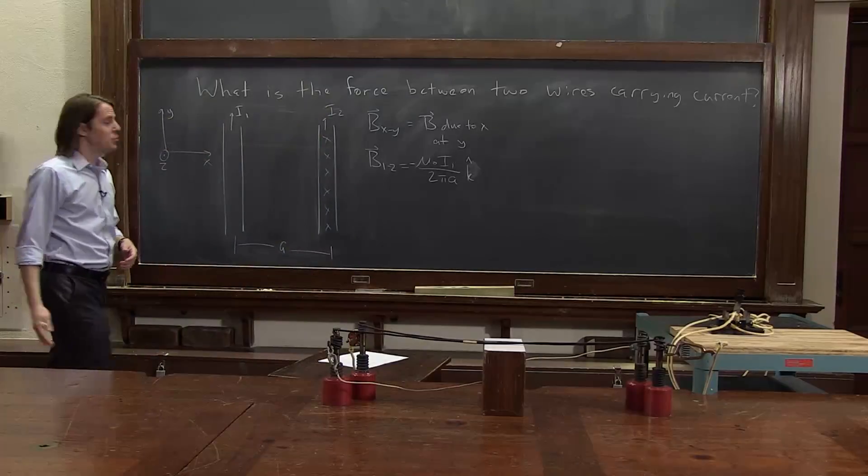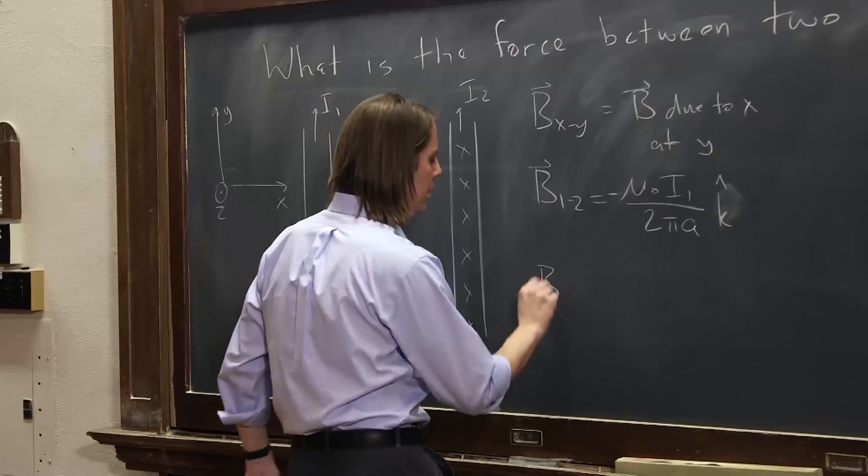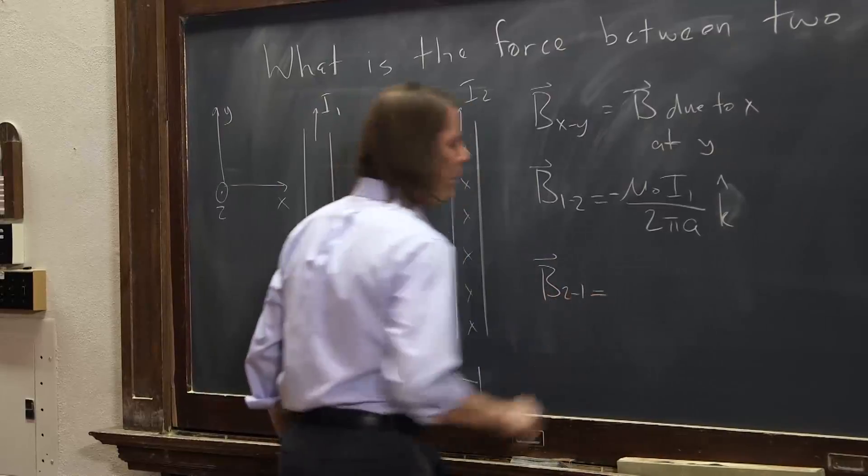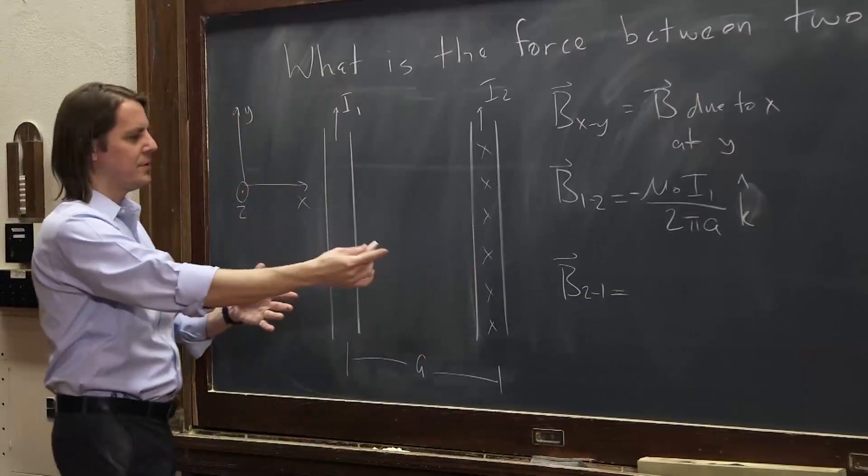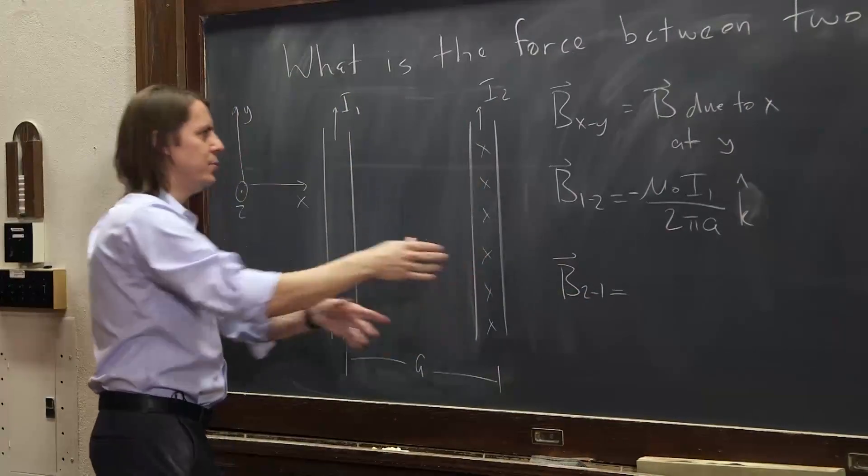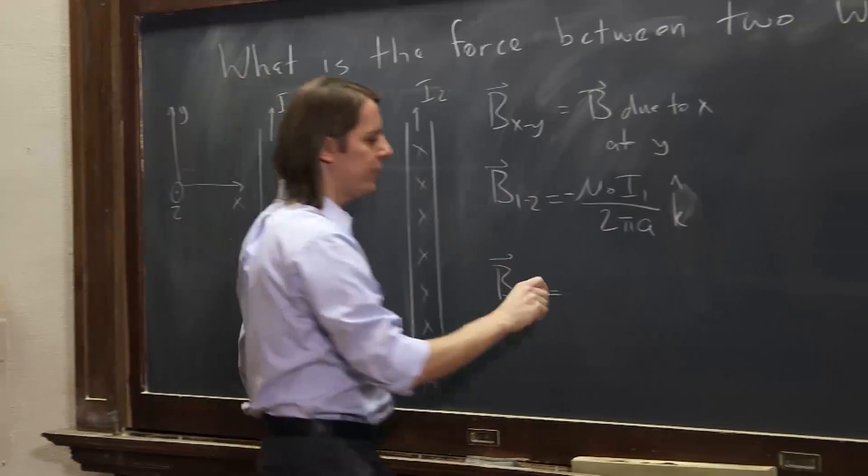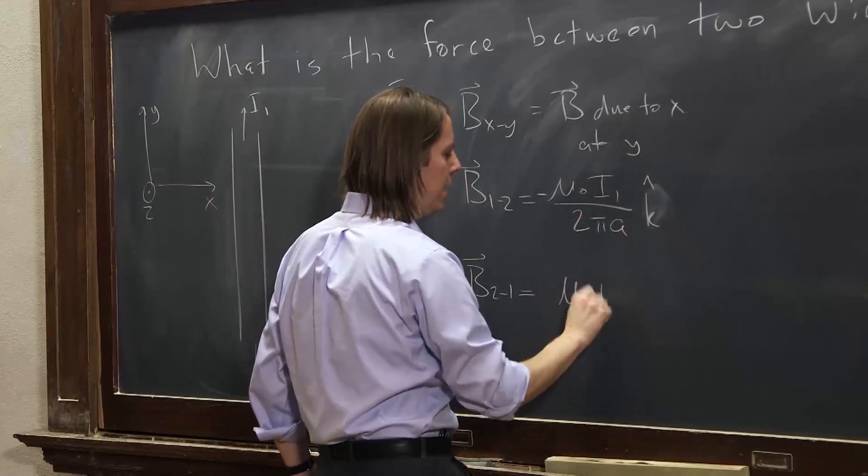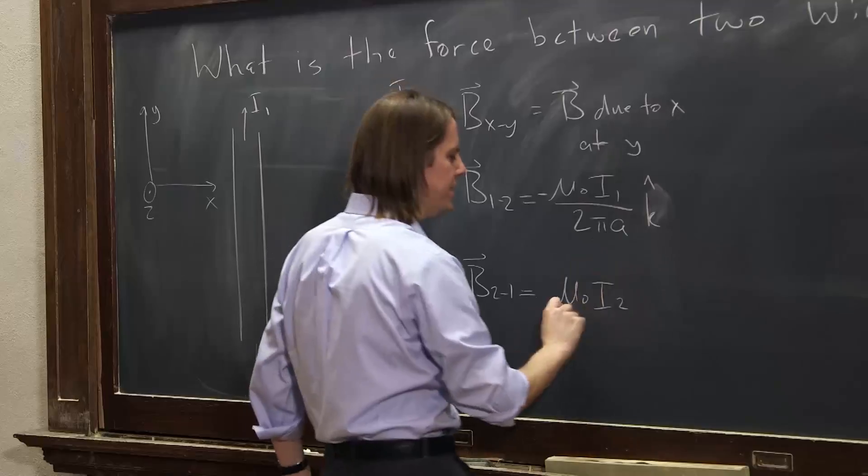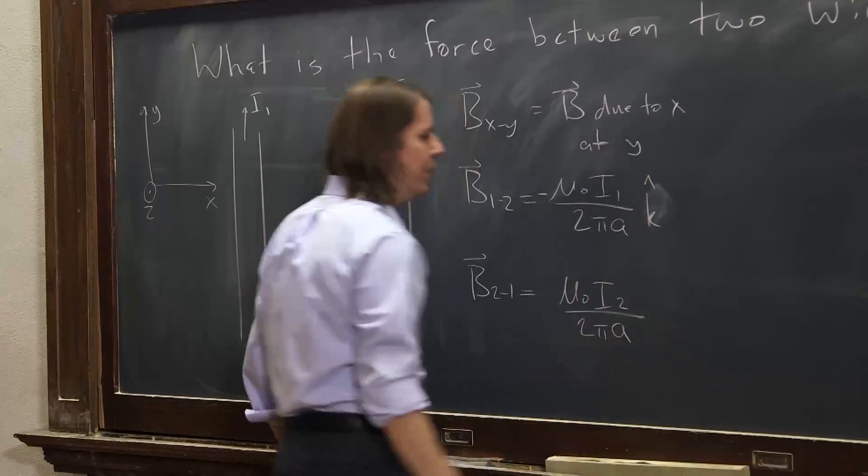Okay, so now let's get B21. B21, well, it's going to be very similar. This is the magnetic field due to i2 created at i1, so it's also mu naught i2 due to i2 over 2 pi. It's the same separation, a.